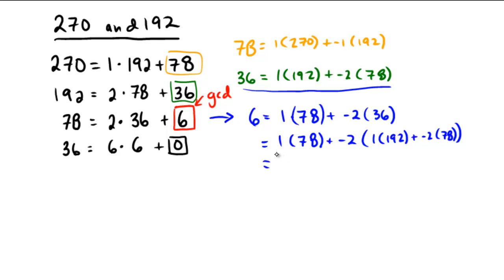So 1 copy of 78 minus 2 times minus 2 would be plus 4 copies of 78. We're going to get 5 copies of 78 from there, and from here we're going to get minus 2 copies of 192. So we're going to say minus 2 copies of 192 plus the 1 and the minus 2 times the minus 2, 4 more for 5 copies of 78. But we do know what 78 is. 78 is this. So now we can say we get negative 2 times 192 plus 5 times the 78, which is 1 copy of 270 plus negative 1 copies of 192.